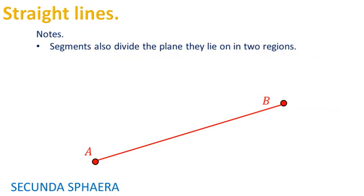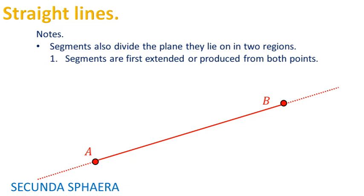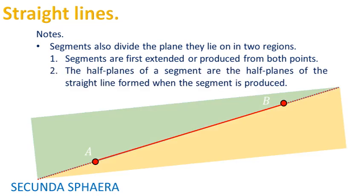Segments also divide the plane they lie into regions. For this, first the segment is extended or produced from both points. Then the half planes of a segment are the half planes of the straight line when the segment is produced.